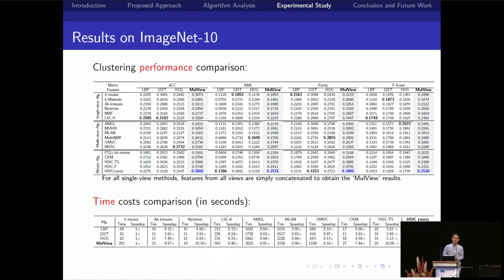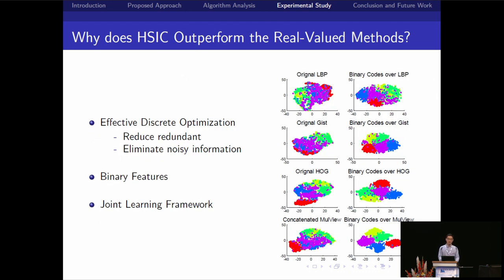Results for ImageNet with 10 classes. We can see that our algorithm can achieve competitive single-view cluster results, but the best multi-view cluster results. The time cost here, our algorithm can speed up the K-means algorithm about 40 times.